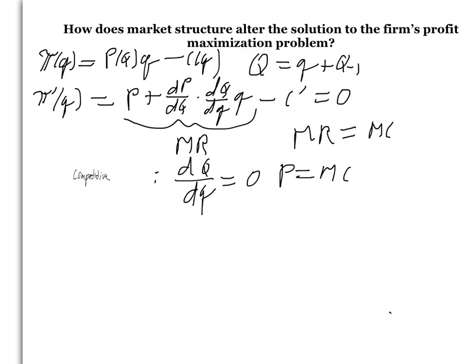Which implies that price is equal to marginal cost, which is equal to average cost because of the free entry and exit assumption of competitive markets. Profit maximization in a competitive market yields zero profits.